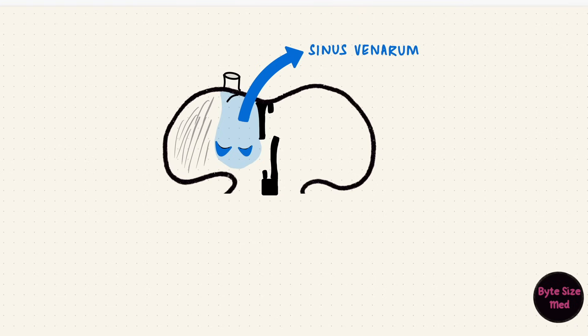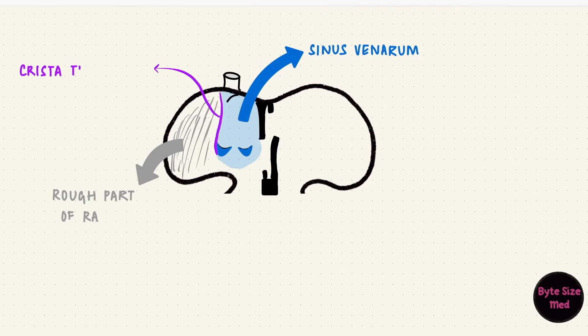The inferior vena cava, coronary sinus, and superior vena cava all open into the sinus venerum, which is the smooth part of the right atrium. The rough part of the right atrium comes from the primitive atrium. The junction between these two parts has that muscular ridge, the crista terminalis. So now the right atrium has developed.